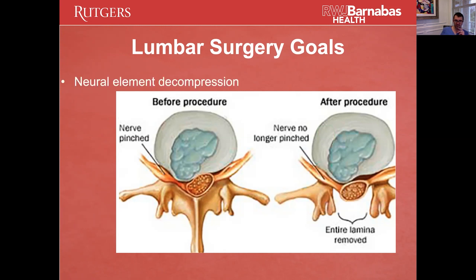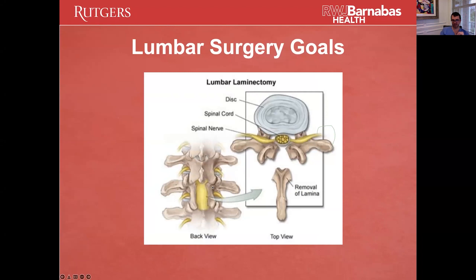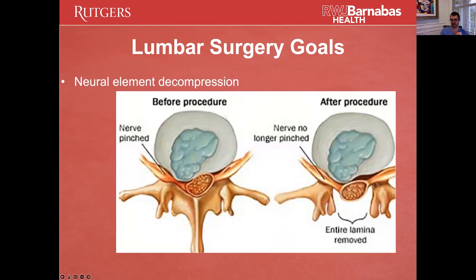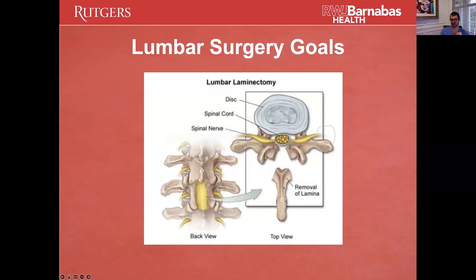With spine surgery — with the exception of scoliosis, which is a somewhat different entity — it's all about neural element decompression. If you decompress the neural elements, patients will feel better. This is a coronal view, what you see in the OR: you have the wound open and you're looking straight down into a prone patient who is face down. These are the spinous processes, and this is the end product of a laminectomy where the thecal sac is decompressed.